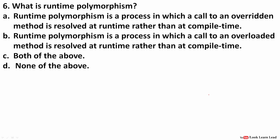What is runtime polymorphism? Runtime polymorphism deals with method overriding — overriding a method with the same signature, meaning the method name, return type, and number of parameters are all the same. It is a process in which a call to an overridden method is resolved at runtime rather than at compile time. Remember: overloading happens at compile time, overriding happens at runtime — runtime polymorphism means overriding.